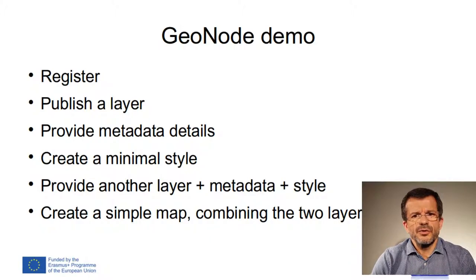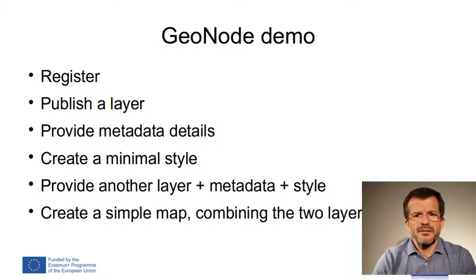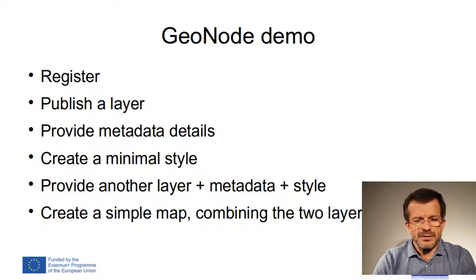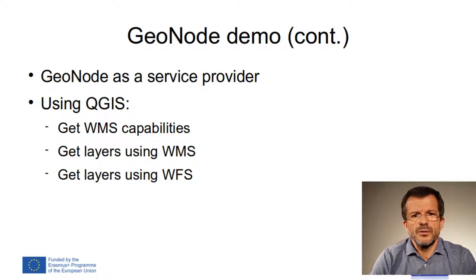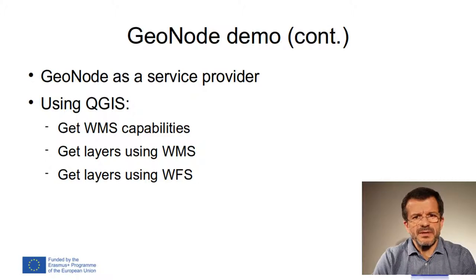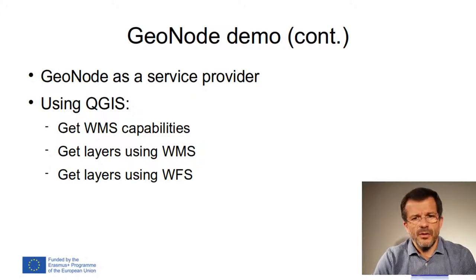In GeoNode, we'll need to register, publish a layer, provide metadata details, create a minimal style, provide another layer plus metadata plus style, and finally create a simple map combining the two layers. Then we'll use GeoNode as a service provider. We'll use QGIS to get the web map server capabilities and get layers either using the web map server and also getting the same data using the web feature server.